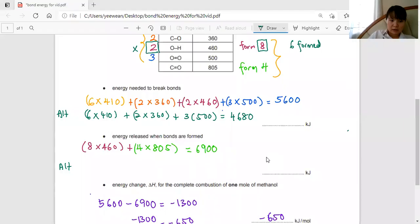Four times 805 and only six of the 460 is being formed. This is the same. I'm going to get 5980.